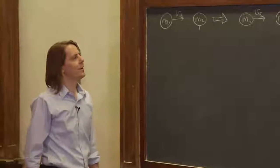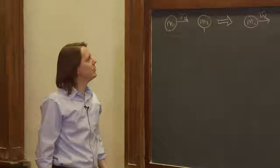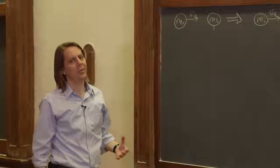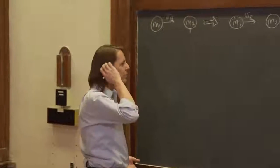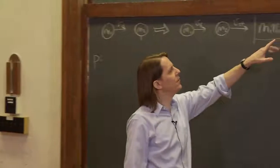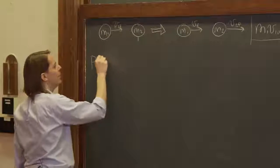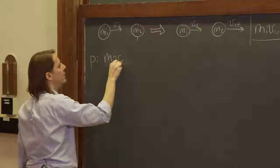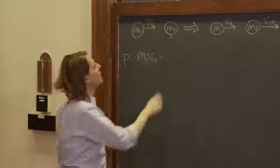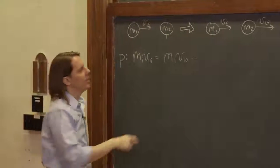So let's think: m1 runs and crashes into m2, which is sitting still. The first thing we could ask is: what is v1f — how fast does mass one go after the collision, or does it move at all? We start by solving the conservation of momentum equation for v1f. That gives us m1·v1f = m1·v1_initial minus m2·v2f.